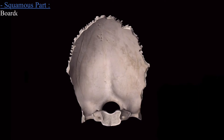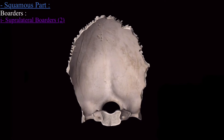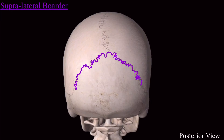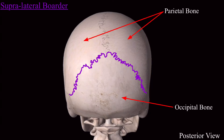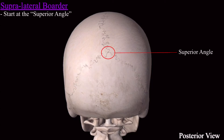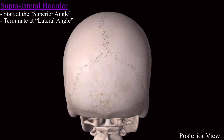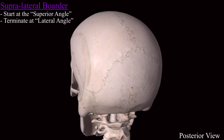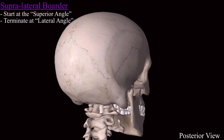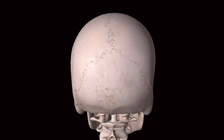Now we come to the four borders of the squamous part. Two borders are the supralateral and two are the infralateral. The supralateral borders attach the occipital bone to the parietal bones via the lambdoid suture. These supralateral borders start at the superior angle and terminate at the lateral angle.